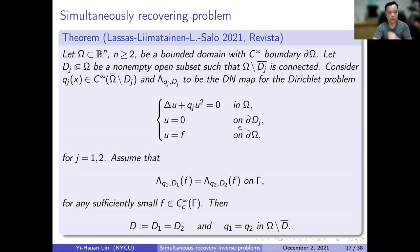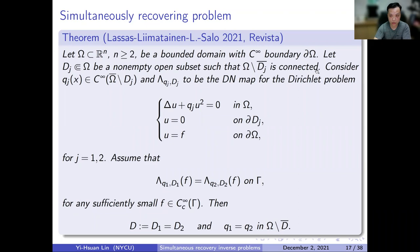Now the main topic: the simultaneous recovery problem. With Mati, Tony, and Mikko, we consider the cavity problem. Given a bounded domain Omega with smooth boundary and a cavity D_j strictly inside Omega, with Omega minus D_j connected (connectedness is required to recover the cavity). We consider Q_j only on the annulus domain Omega minus D_j, and the DN map for the problem. This also holds for any polynomial-type nonlinearity; for simplicity I just show the square case.